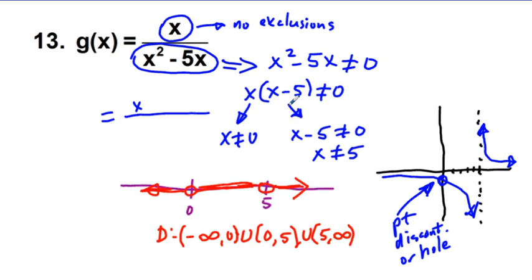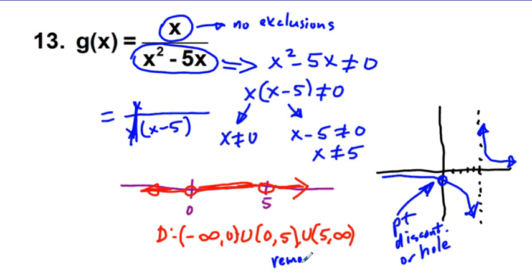We also call this a removable discontinuity because if we factor: x over x times quantity x minus 5, and cancel by division, we're left with 1 over x minus 5. This function looks like y equals 1 over x minus 5. So we call it a removable discontinuity. This is our domain, which we box in.